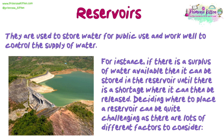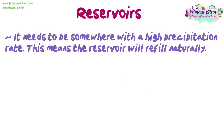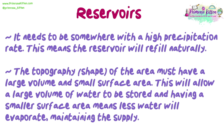Deciding where to place a reservoir can be quite challenging, as there are lots of different factors to consider. It needs to be somewhere with a high precipitation rate — this means the reservoir will refill naturally. The topography, or shape, of the area must have a large volume and a small surface area. This will allow a large volume of water to be stored, and having a smaller surface area will mean less water will evaporate, maintaining the supply.